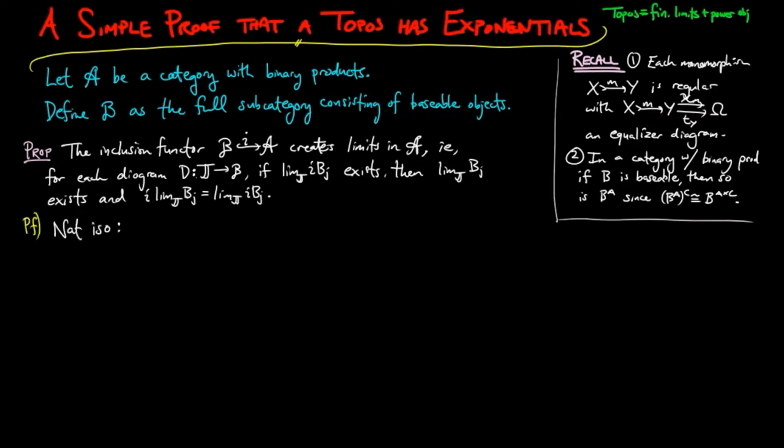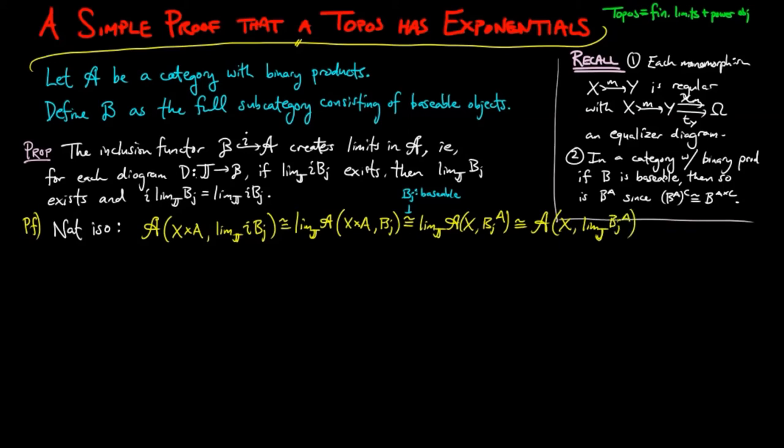For the proof, assuming that the limit of ID exists in A, we have natural isomorphisms from the set of morphisms from x cross A to the limit, to the set of morphisms from x to the limit of the exponential of each object in the diagram Bj to the A, for each pair of A objects x and A. Therefore, by Yoneda, the limit is baseable, and thus in B.